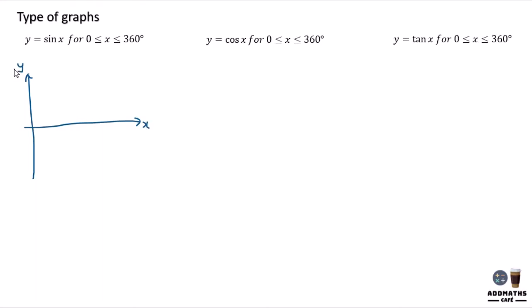Sin x will be starting from 0, goes down, and at the end here — this part, half of it will be 180 degrees. And the last part here will be 360 degrees. The maximum magnitude here will be 1, and the minimum magnitude here will be negative 1.